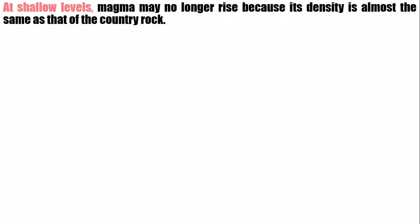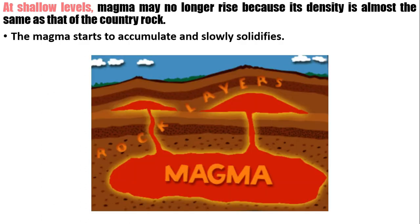At shallower levels, magma may no longer rise because its density is almost the same as that of the country rock. So they are at equilibrium. Here, the magma starts to accumulate and slowly solidifies, so it will not go out.